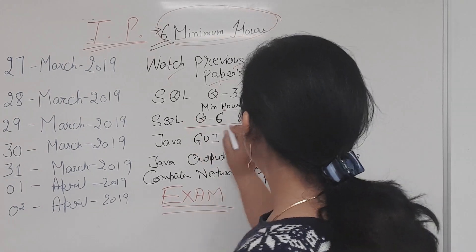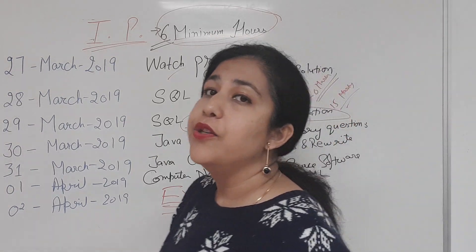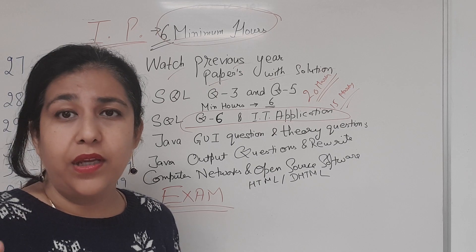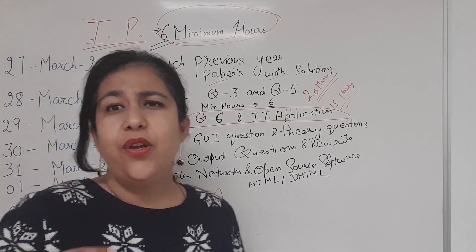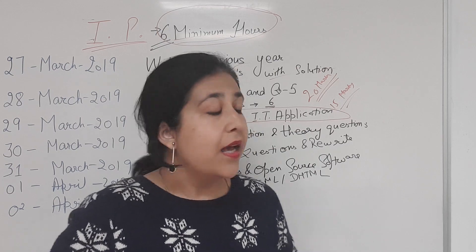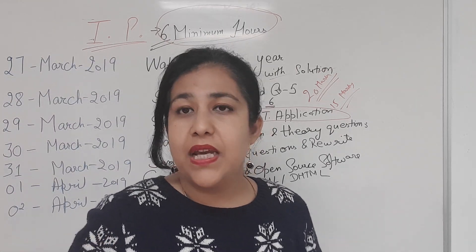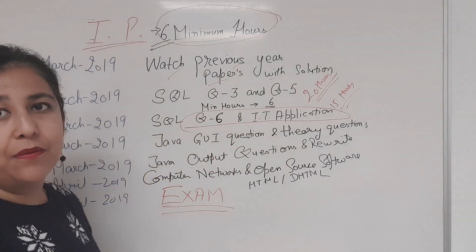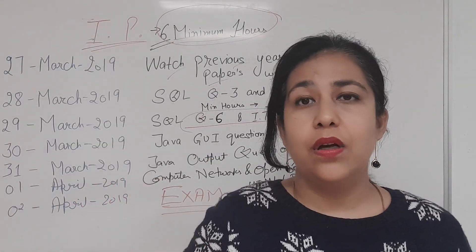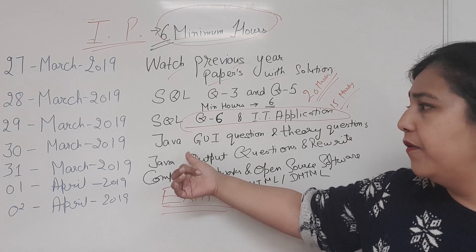On 29th March, do question number 6 and IT applications, which will secure 15 marks. Question number 6 is worth 10 marks and covers creating a table, relationship cardinality, joins, and related commands. IT applications is easy theory worth 5 marks. Make sure you practice all the papers so there is nothing you won't be able to answer.